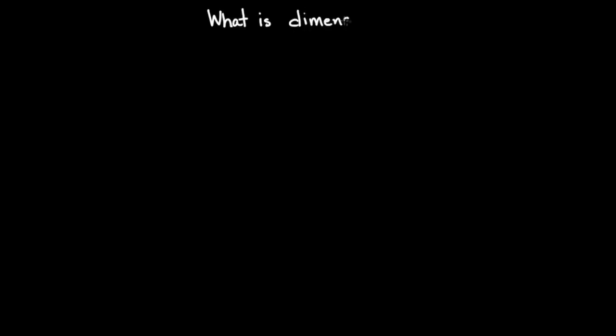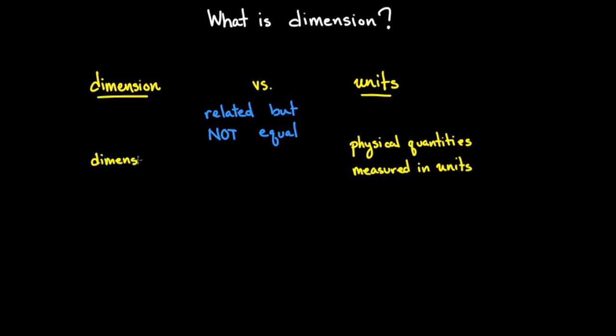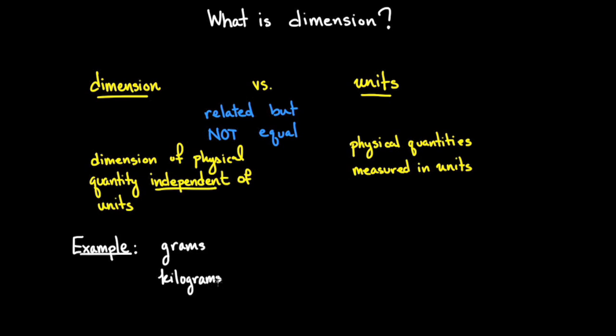Before we talk about dimensional analysis, we need to know what dimension is. Dimensions and units are related but different concepts. Physical quantities are measured in units. The dimension of the physical quantity is independent of the particular units chosen. For example, both grams and kilograms are units, but they are units of mass. And mass is what we'll call the dimension.